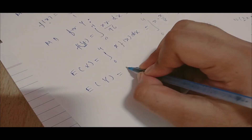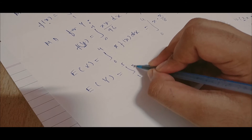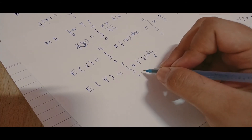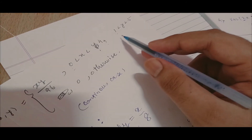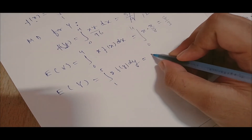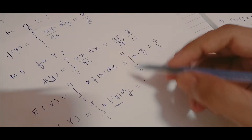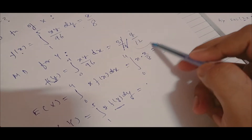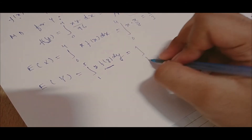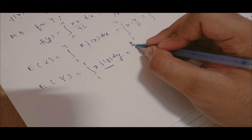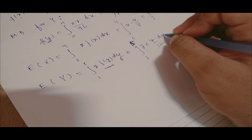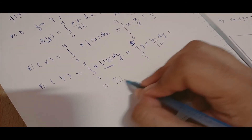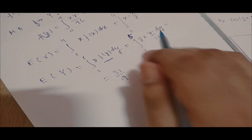E(Y) = integral from 1 to 5 of y·f(y) dy = integral from 1 to 5 of y·(y/12) dy. After solving, E(Y) = 31/9.